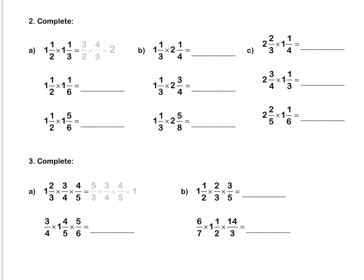Question 2. We have 2 mixed numbers, so we must rewrite both of them as improper fractions. Then we simplify in the question: divide top and bottom by 3, then divide top and bottom by 2. And we're left with 2 over 1, or 2 wholes, as the final answer.